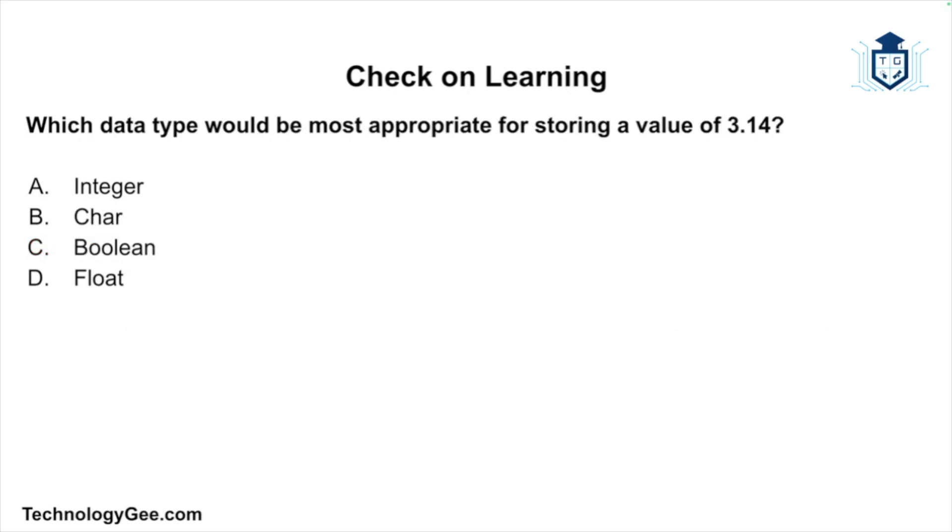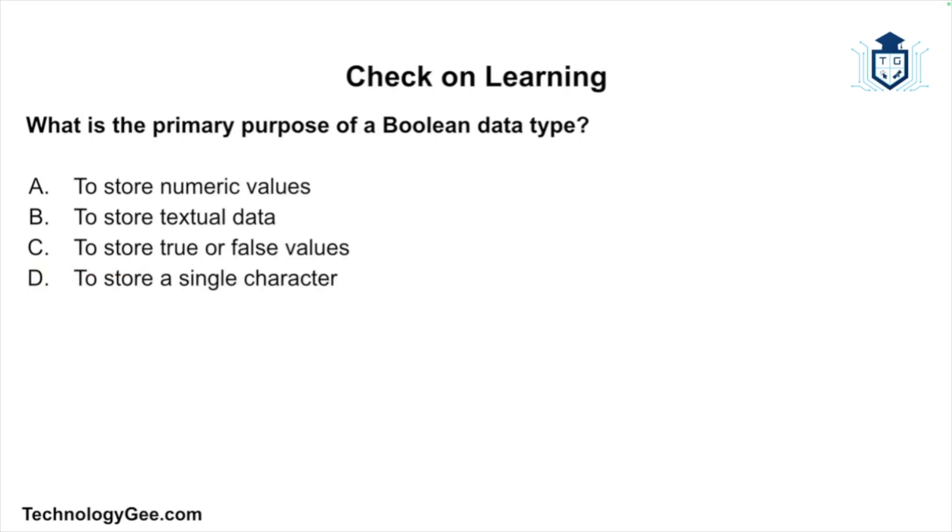Next question: which data type would be most appropriate for storing a value of 3.14? Would it be an integer, a char, Boolean, or a float? And the correct answer is float. The float data type is used to store decimal numbers such as 3.14.